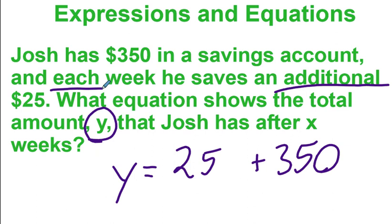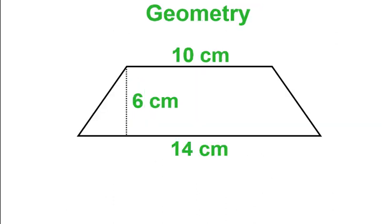So the three words are each, every, and per. In this problem we have 'each week' — that means the week goes with the number associated with 'each,' which is 25. That's where the variable goes: 25x. When you see each, every, or per, it means you multiply. The number with each/every/per gets multiplied by the variable.